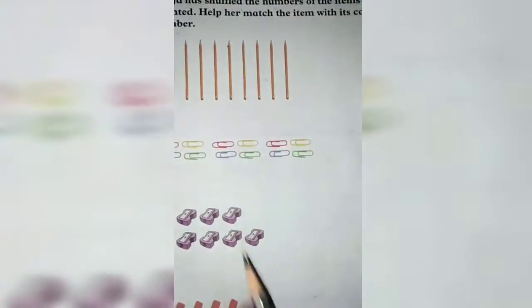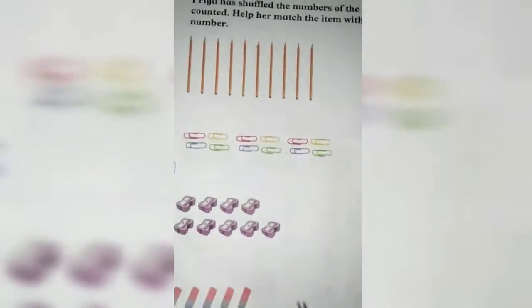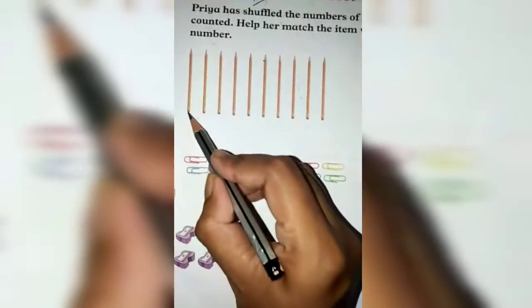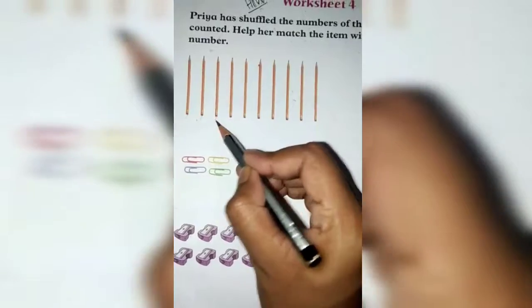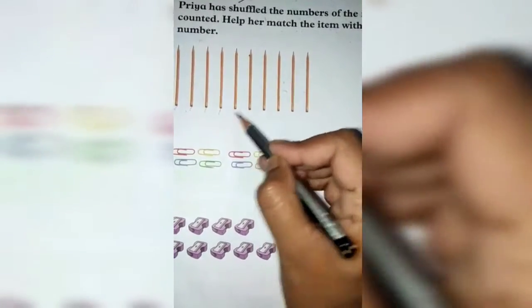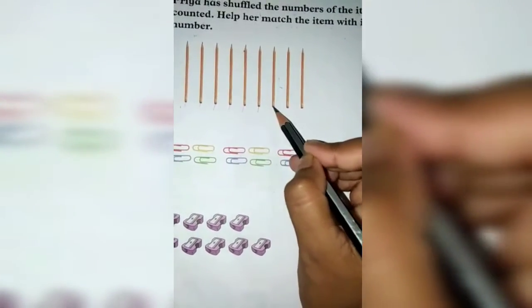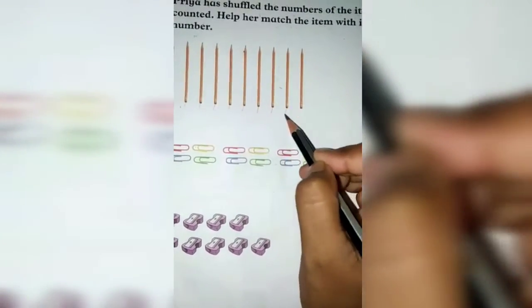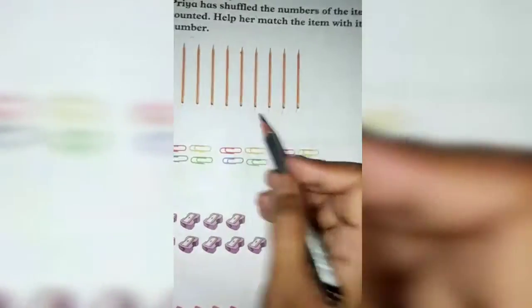You have to do this in your homework — this is your homework. You have to count like this: 1, 2, 3, 4, 5, 6, 7, 8, 9, 10. These are 10 pencils, so match with the number 10.